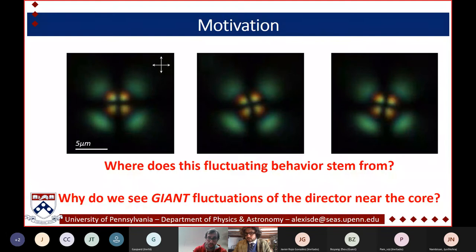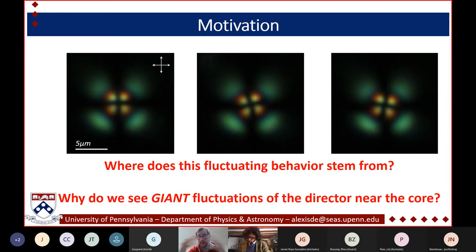So our main motivation is to understand where this behavior comes from and why we see it. We call them giant fluctuations because they're larger than typical vibrations we observe in the crystal. Why do they occur, and why do they occur near the core of the drop?